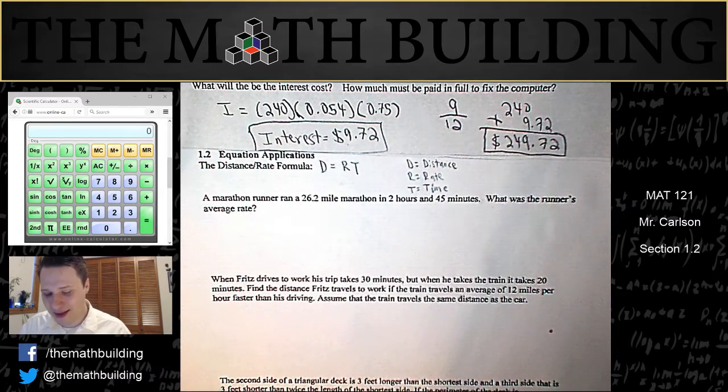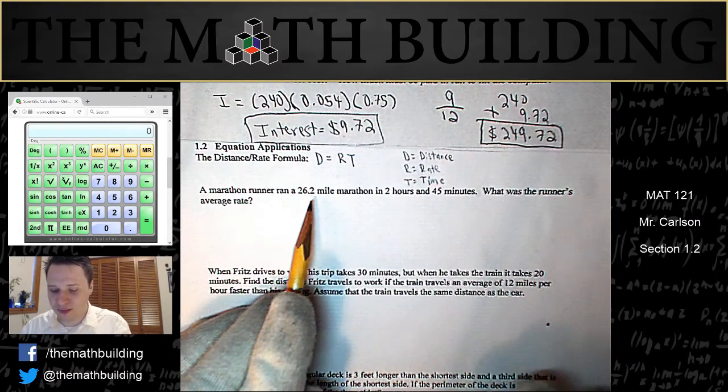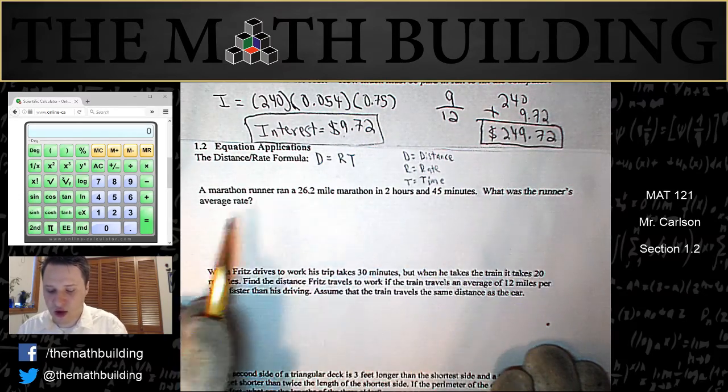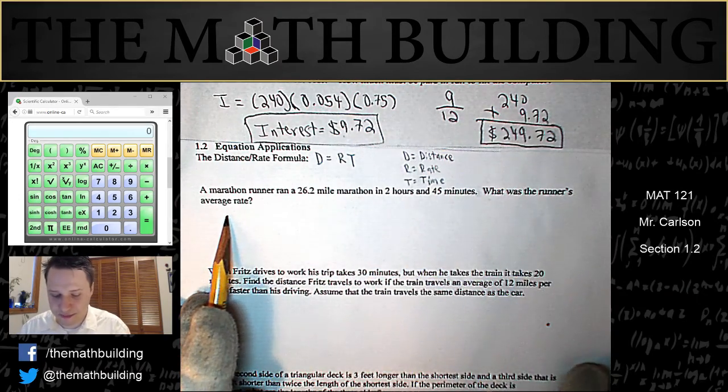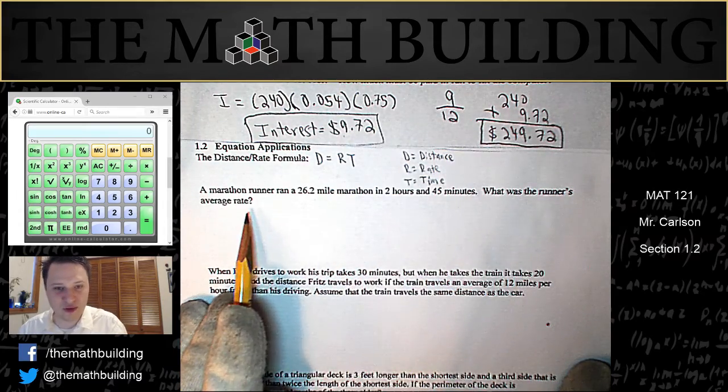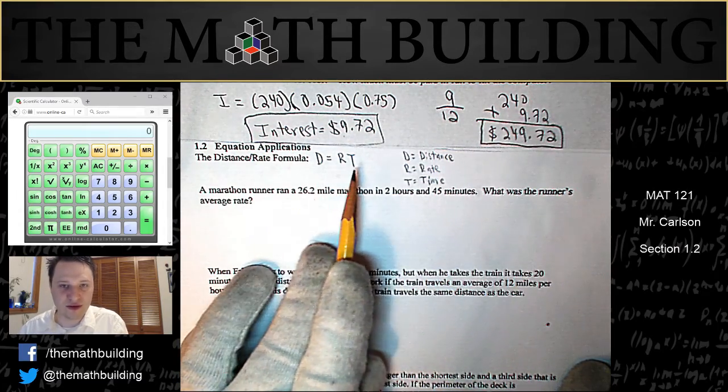So let's use dirt to solve the problem. A marathon runner ran a 26.2 mile marathon in 2 hours and 45 minutes. What was the runner's average rate? You see that they give us the distance and the time, and they want to know the rate, so it's obvious we need to use this formula.